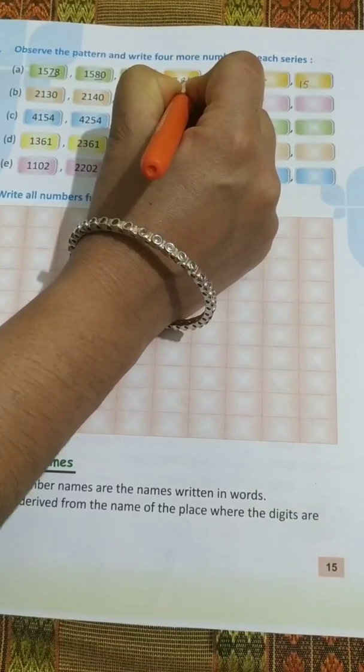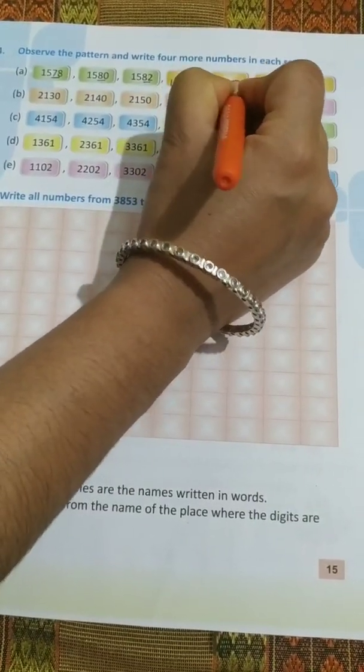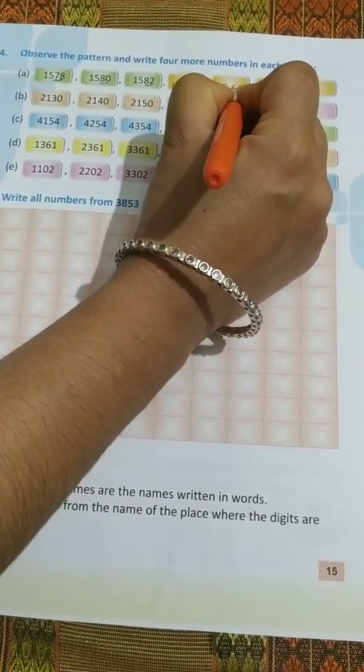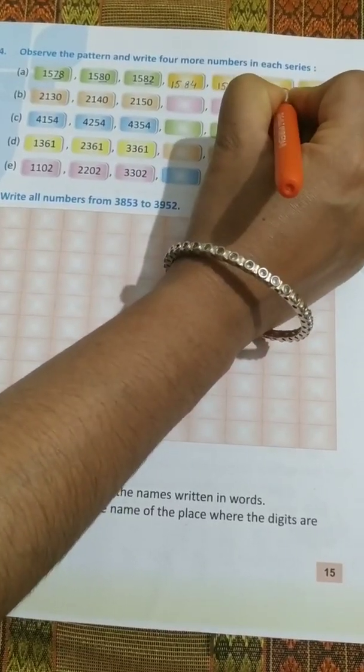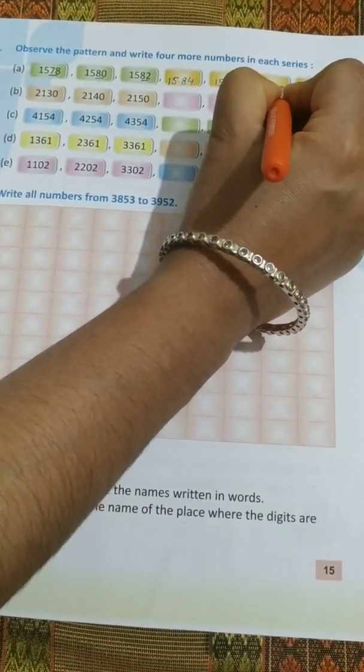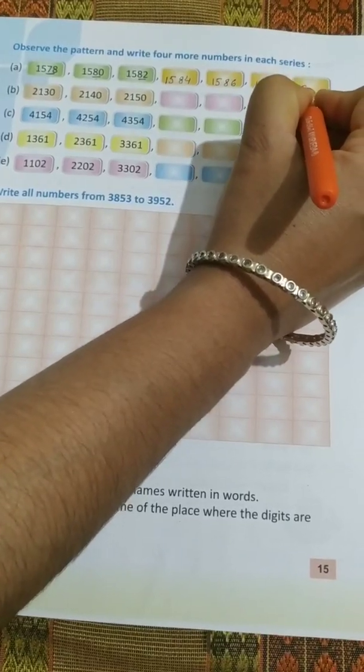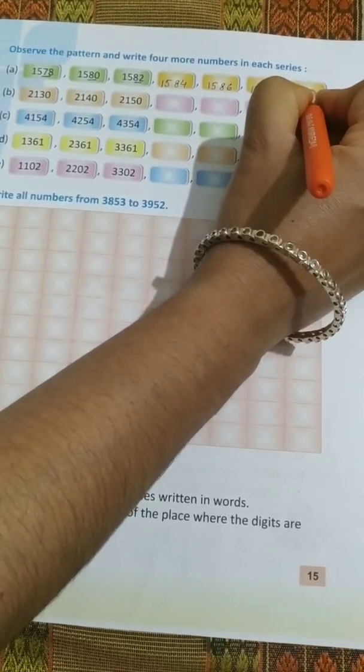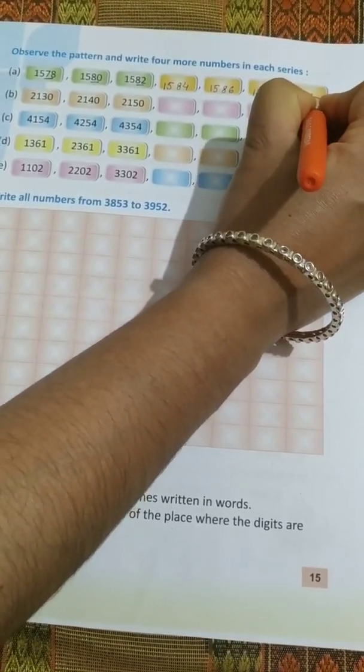84. Then 85 we have to skip. 86. 87 we have to skip. Then 88. Then 89 we have to skip. What will be the next? 90.